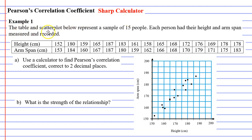It says the table and scatterplot below represent a sample of 15 people. Each person had their height and arm span measured and recorded. So here we have it in our table. Question A says use a calculator to find Pearson's correlation coefficient correct to two decimal places.